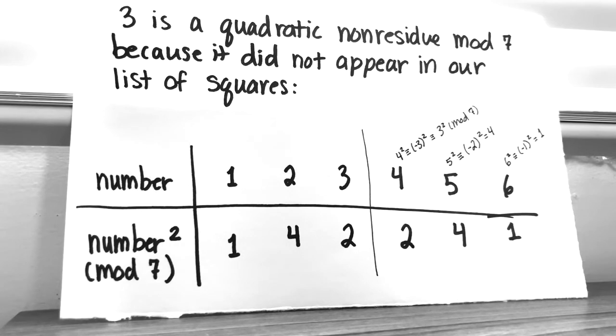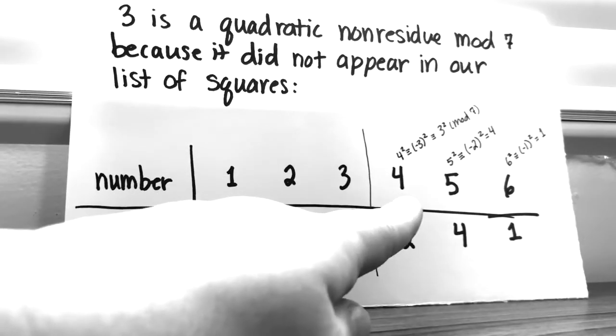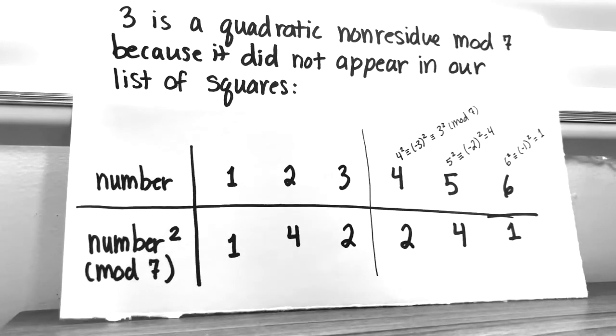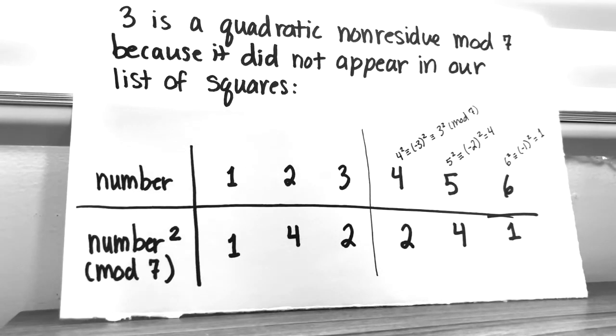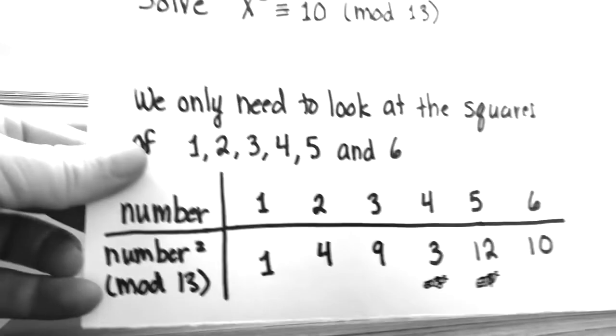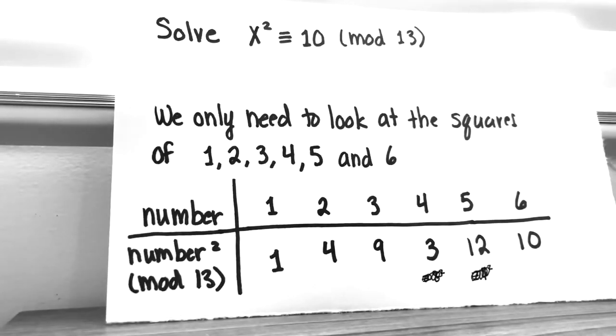And the reason for this symmetry is that if you look at 4, I wrote it up here, but 4 is congruent to minus 3 mod 7. So 4 squared is the same as minus 3 squared, which means that 4 squared mod 7 is going to be the same as 3 squared mod 7. Similarly, 5 squared is going to be the same as 2 squared mod 7, and 6 squared will be the same as 1 squared mod 7. So because of this symmetry, in that last example, we did all of the squares mod 7 to decide whether or not 3 was a square.